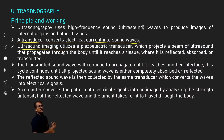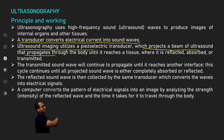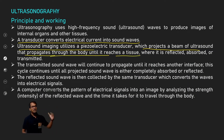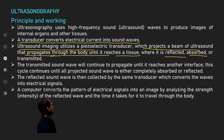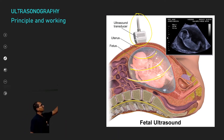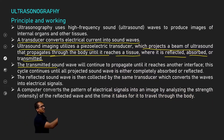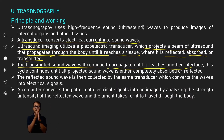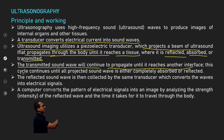Ultrasonic imaging utilizes a piezoelectric transducer — one type of transducer which projects a beam of ultrasound that propagates through the body until it reaches a tissue, where it is reflected, absorbed, and transmitted. The transmitted sound wave continues to propagate until it reaches another tissue interface. This cycle continues until all the projected sound wave is either completely absorbed or reflected.